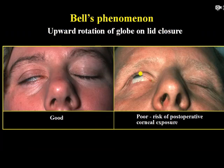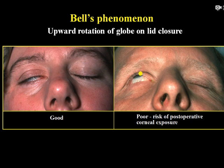The other important phenomenon required for treatment planning is Bell's phenomenon. We explain to the patient that we will try to open the eye and ask them to keep it closed. What happens is the eyeball rolls upward. If the patient can roll the eyeball upward and you cannot see the cornea, Bell's phenomenon is good. If you can see the cornea, Bell's phenomenon is not good — this is a poor prognostic factor and a risk for postoperative corneal exposure, which can ultimately lead to a painful blind eye.